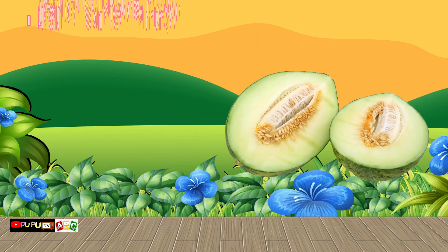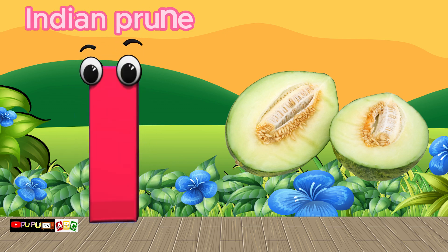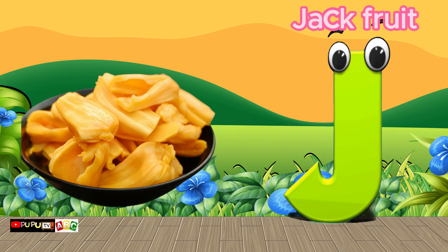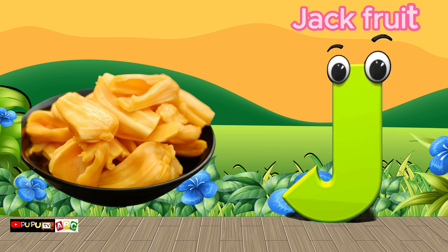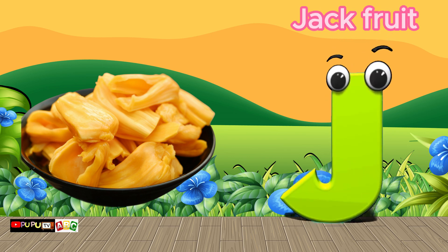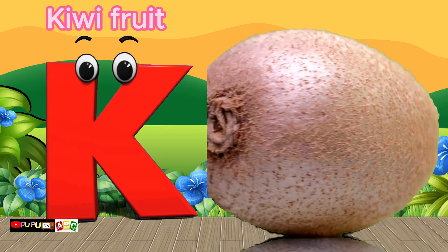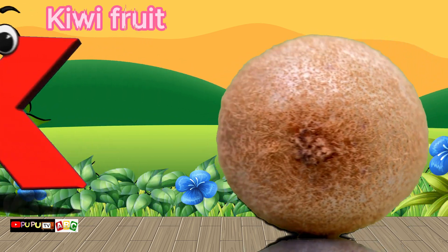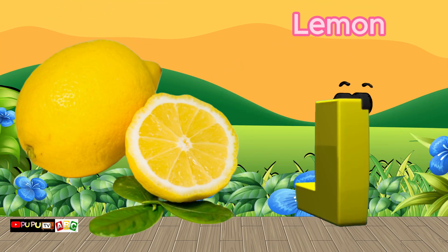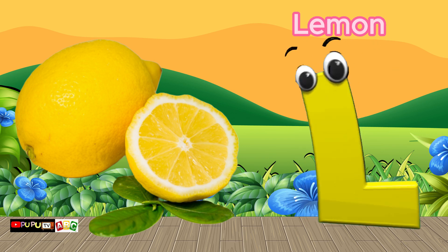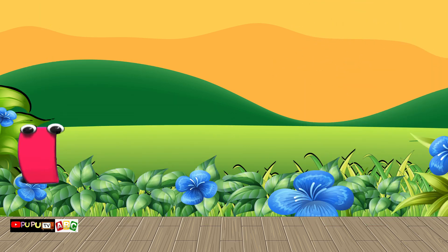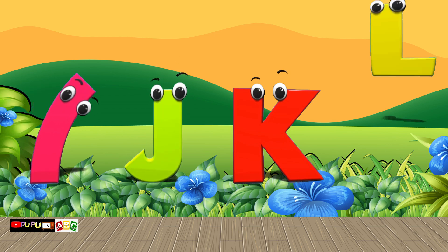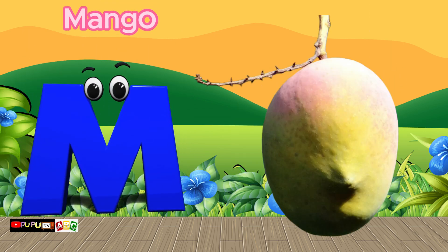I is for Indian Prune, I-I-Indian Prune. J is for Jackfruit, J-J-Jackfruit. K is for Kiwifruit, K-K-Kiwifruit. L is for Lemon, lemon.